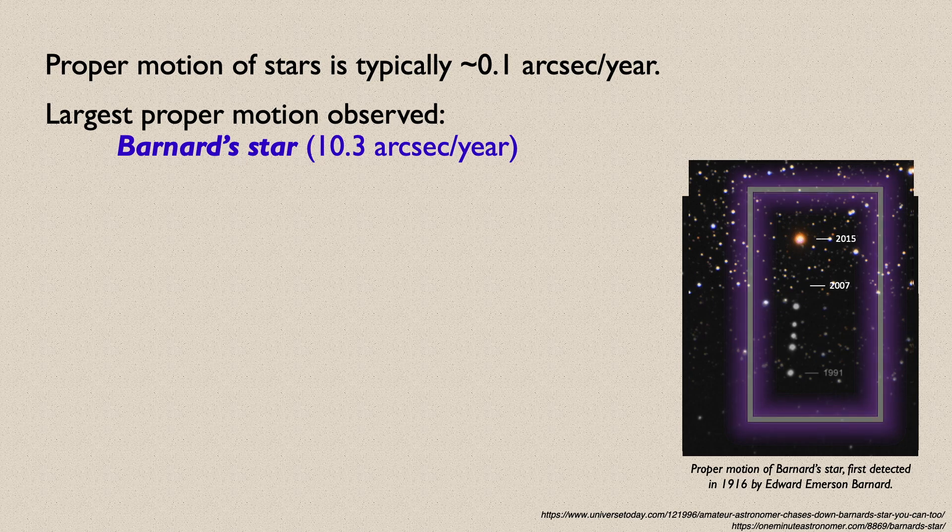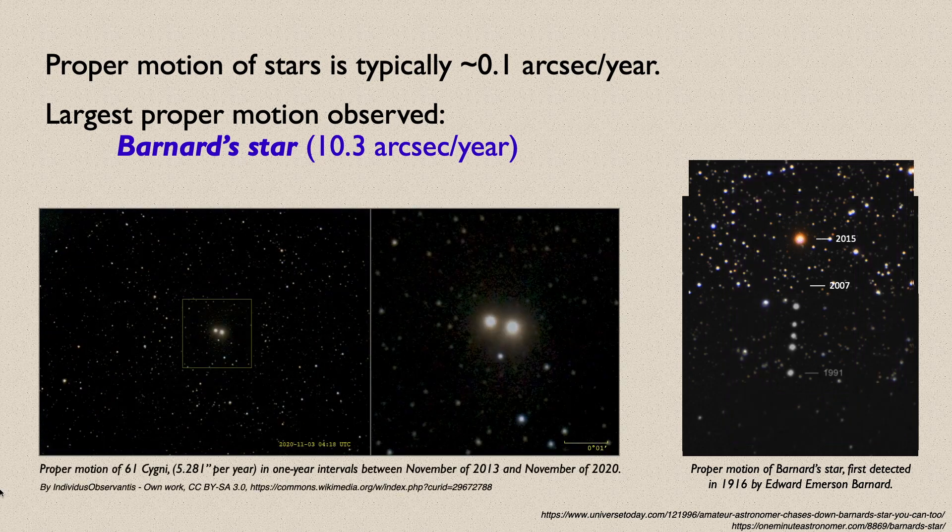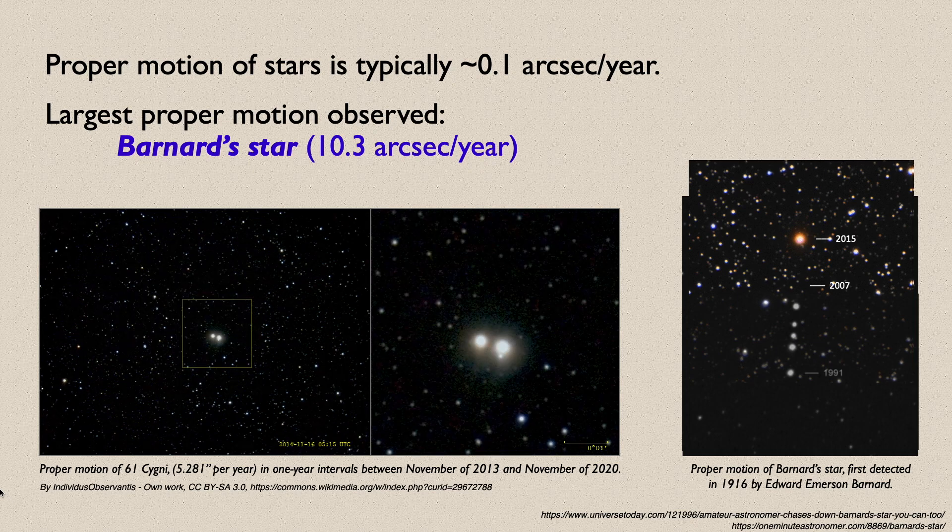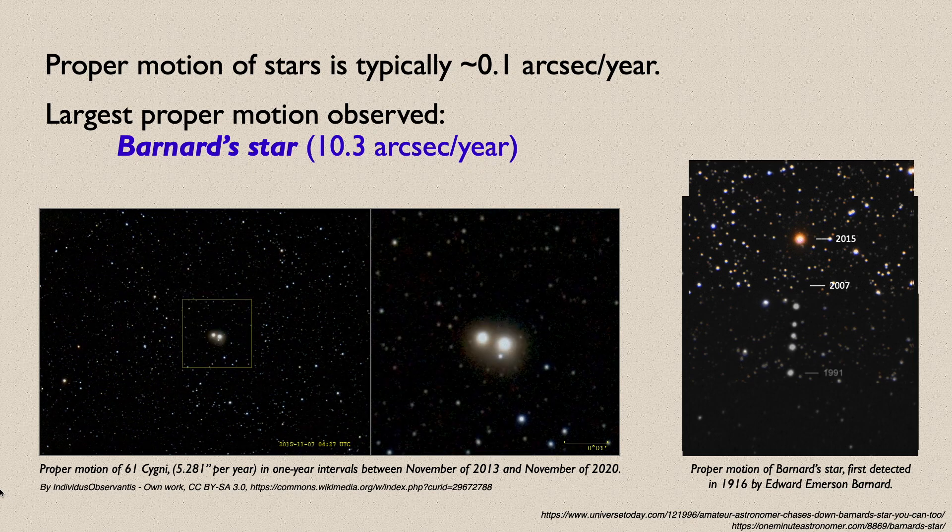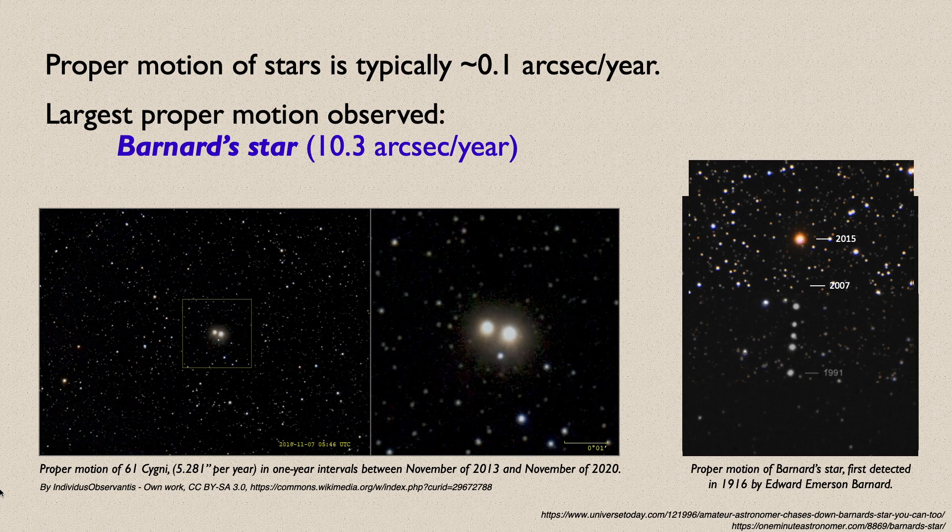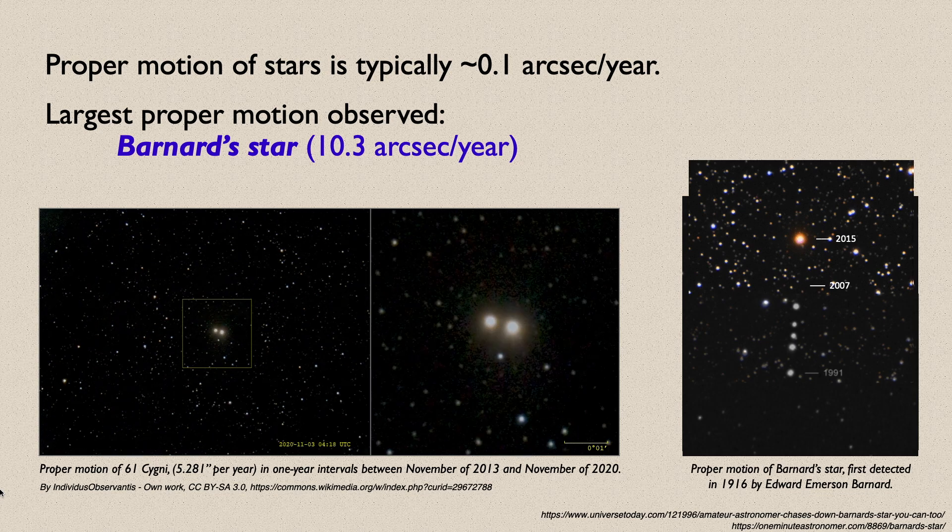Another star with a notable amount of proper motion is 61 Cygni, which moves at 5.281 arc seconds per year, a little over half the rate of proper motion of Barnard's star. Its movement can be seen here over a period of seven years in the animation shown on the left.